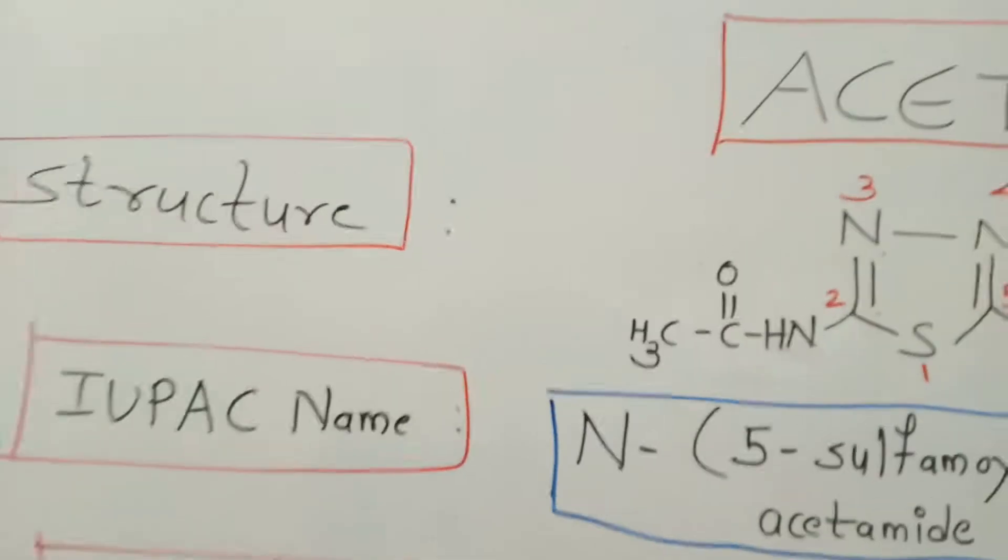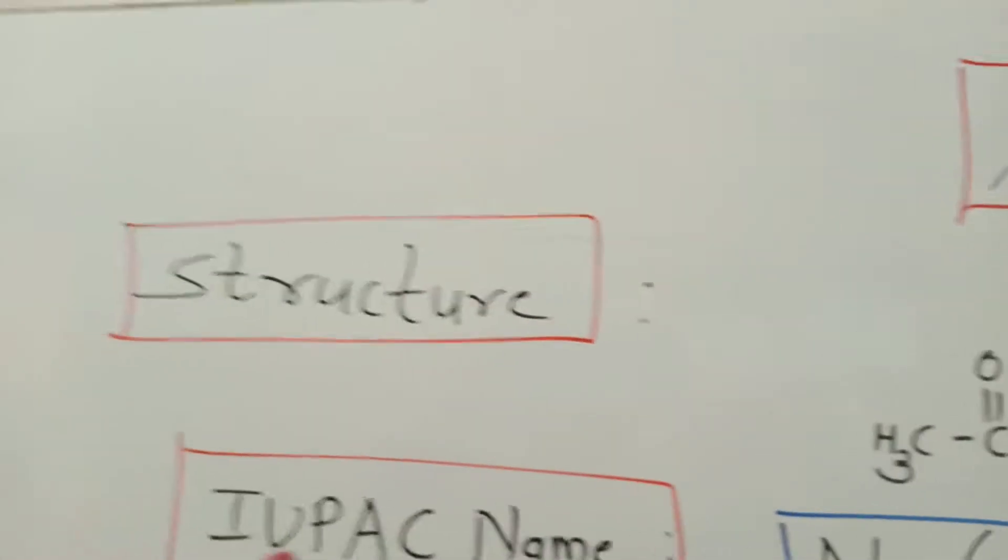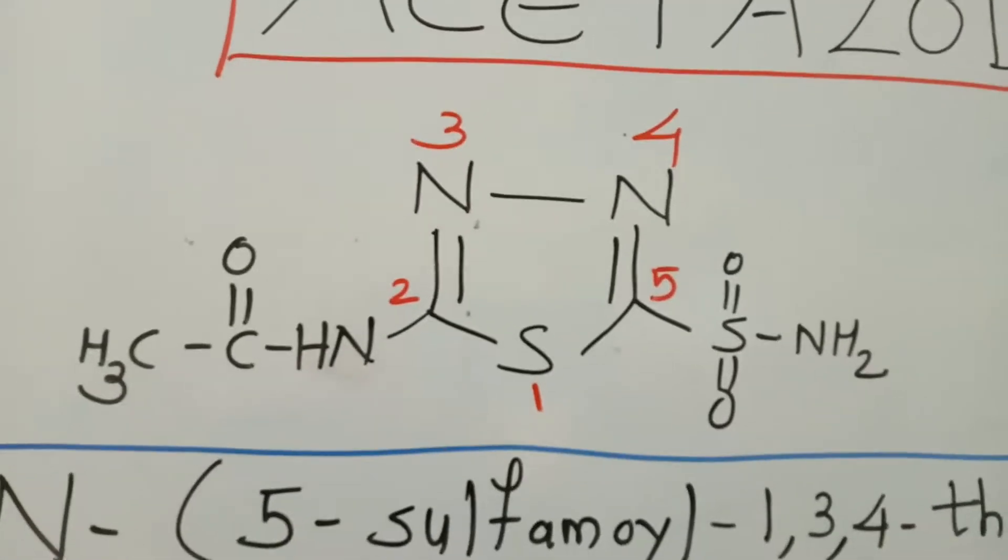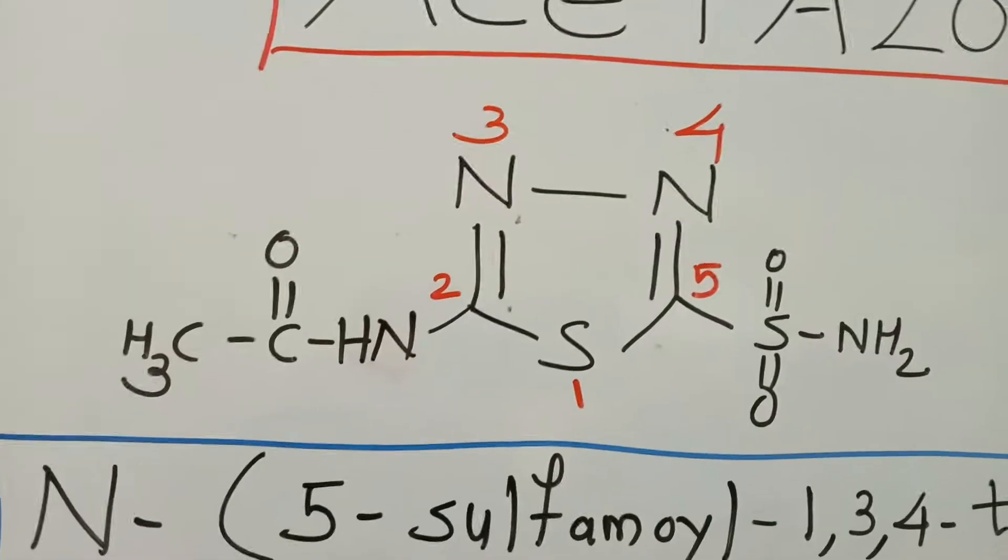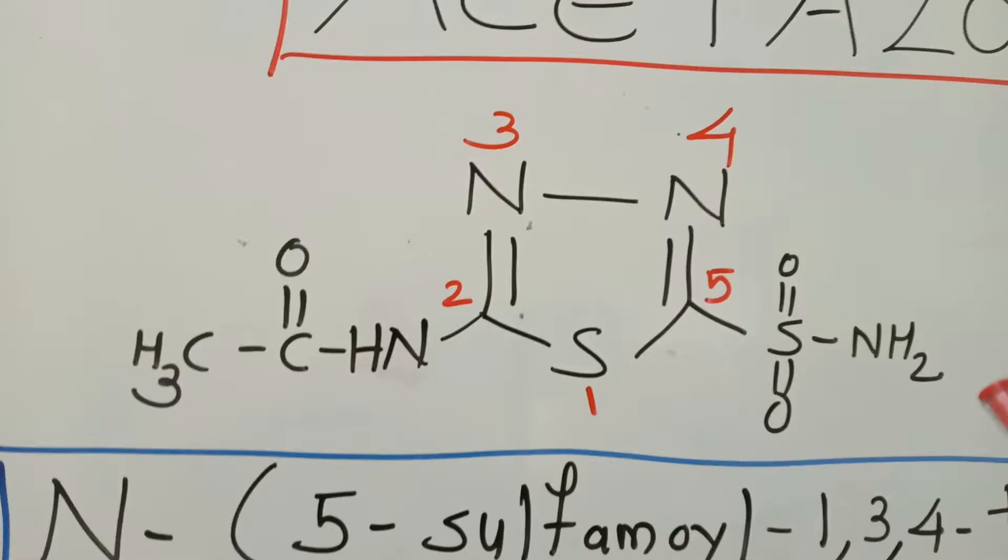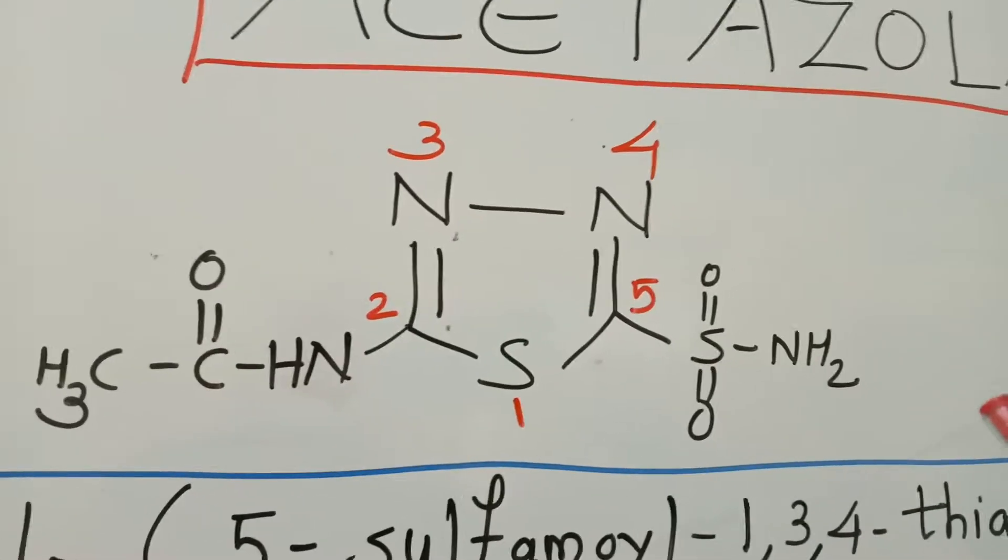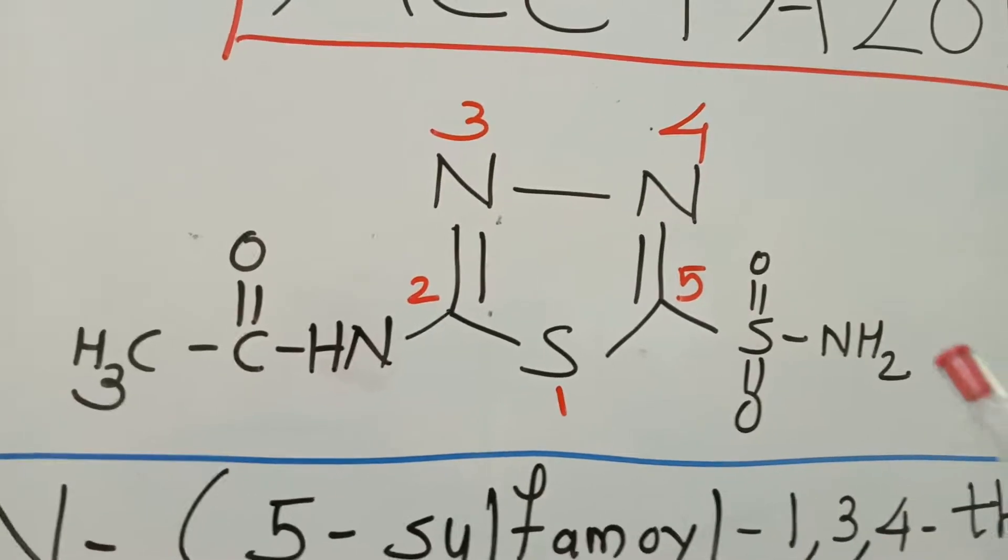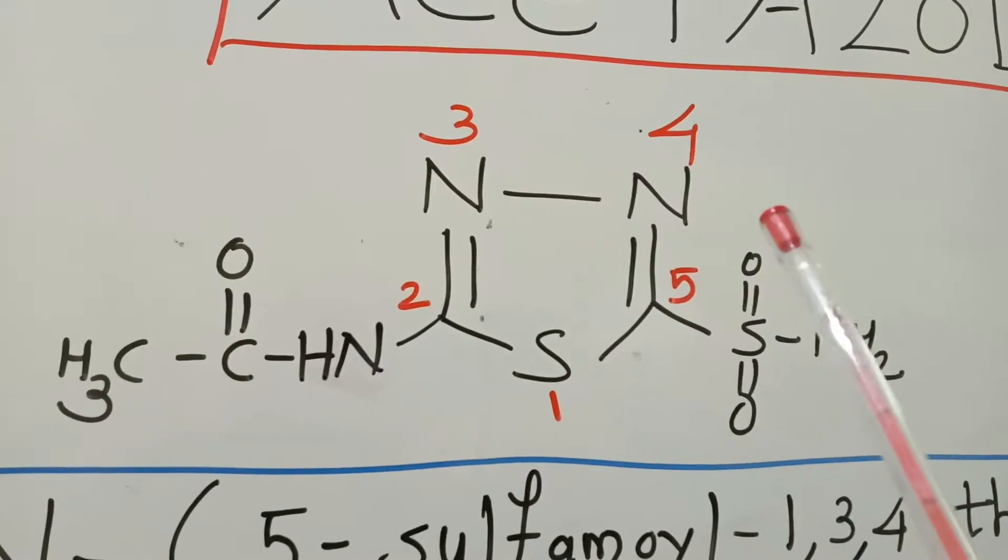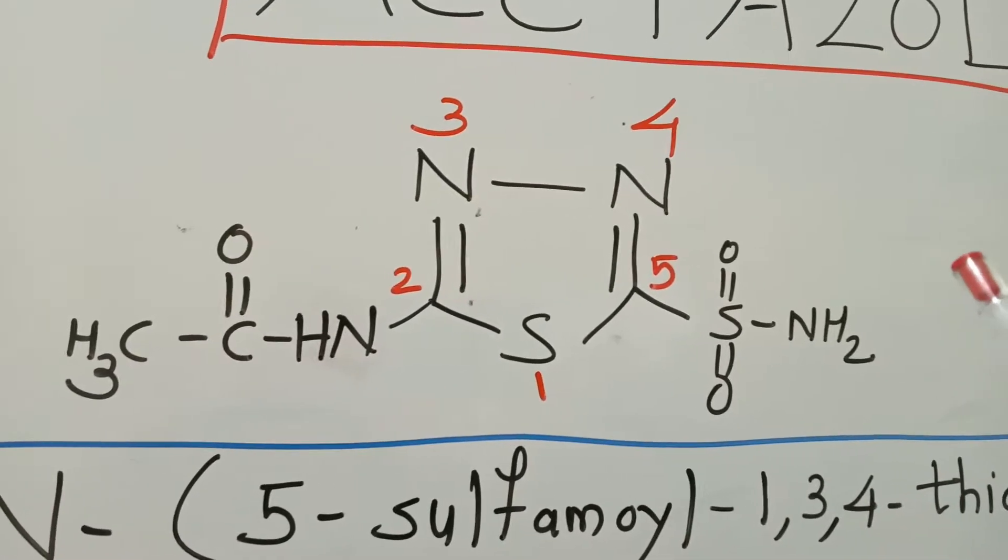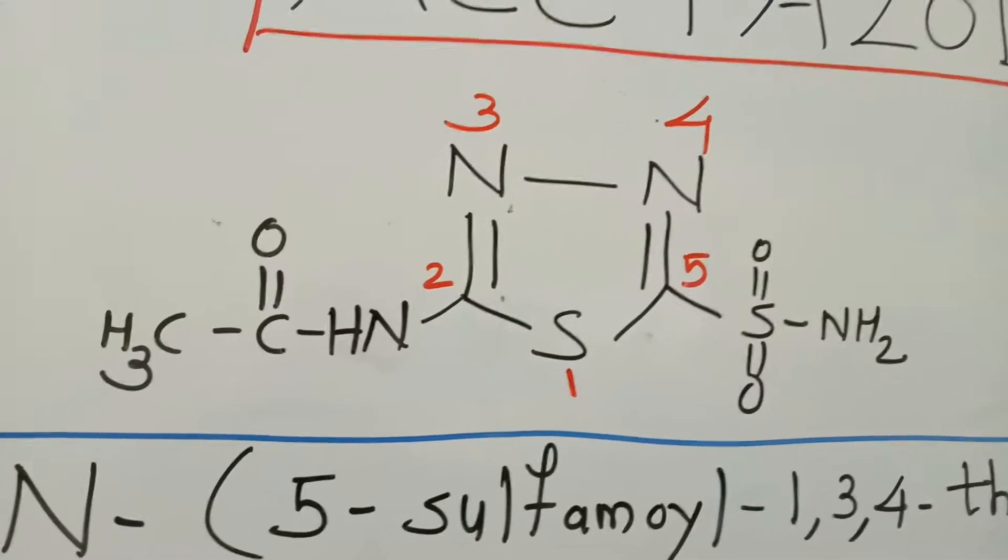This compound has the following structure. If you look at this structure, you will find there is a 5-membered heterocyclic ring containing a sulfur and 2 nitrogens at 1, 3, and 4 position with respect to each other.